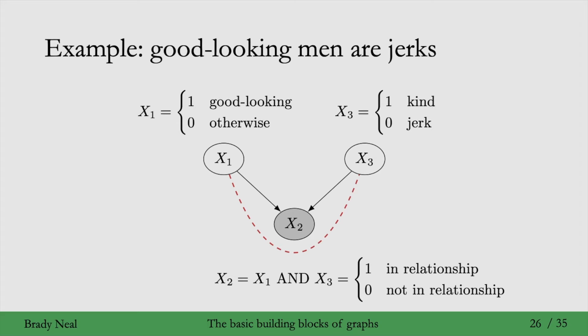if this is the generative process of the data, that means that all men who are both good-looking and kind are in a relationship. So, you are not looking at those men when you're conditioning on not in a relationship.